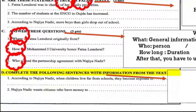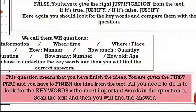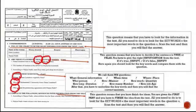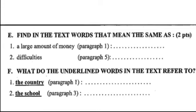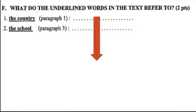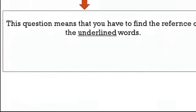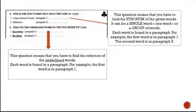Question D is 'complete the following sentences with information from the text.' This means they give you the beginning of an idea and you have to finish it from the text. Question E is 'find words in the text that mean the same as' — meaning you have to look for synonyms of given words. Question F says 'what do the underlined words in the text refer to?' — you have to find the reference of the underlined words. This covers all of section one: comprehension questions.